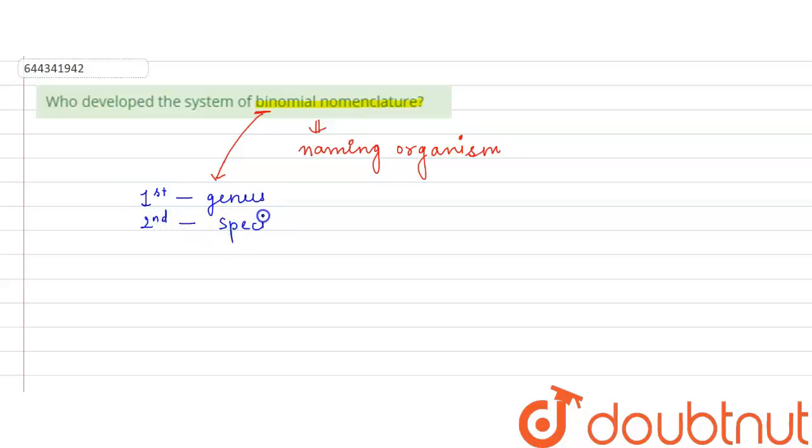The first word represents the genus of the organism and the second word represents the species of the organism. Let's give an example of it. Basically, if we talk about the Homo sapiens, Homo sapiens is the scientific name of the human beings.